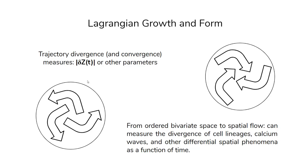Finally, we have Lagrangian growth and form — an approach from Richard Gordon of the Devaworm group — thinking about embryos as Lagrangian structures. Going back to our trajectory divergence measures, we can use those and other parameters to understand the embryo as a Lagrangian system with spatial flows. This takes us from the bivariate space of linear functions to a spatial flow. We can use this to look at the divergence of signaling in space, calcium waves in embryos, or other differential spatial phenomena as a function of time — measuring things flowing outward and inward in a spherical volume.